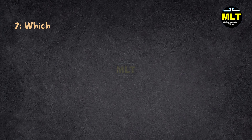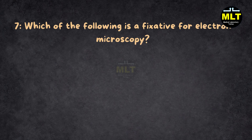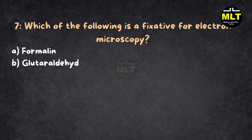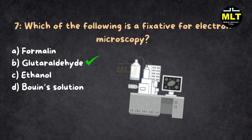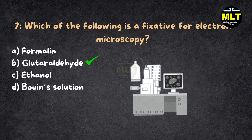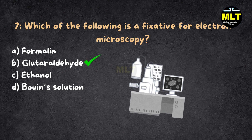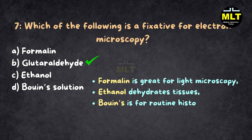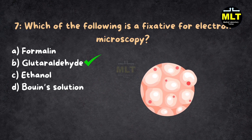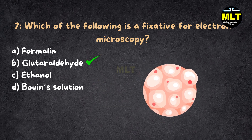Question 7: Which of the following is a fixative for electron microscopy? Options: A. Formalin, B. Glutaraldehyde, C. Ethanol, D. Bouin's solution. Correct answer: B. Glutaraldehyde. Explanation: Glutaraldehyde is the electron microscopy expert, preserving ultrastructures with its strong cross-linking properties. Formalin is great for light microscopy, ethanol dehydrates tissues, and Bouin's is for routine histology. For high-detail work, glutaraldehyde takes the spotlight — no blurry details here.